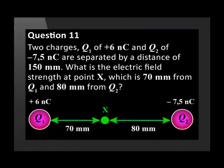Question 11. Two charges, Q1 of positive 6 nanocoulombs and Q2 of negative 7.5 nanocoulombs, are separated by a distance of 150 millimeters.